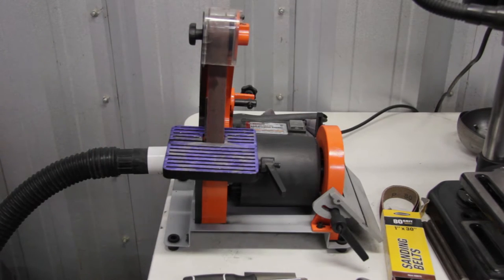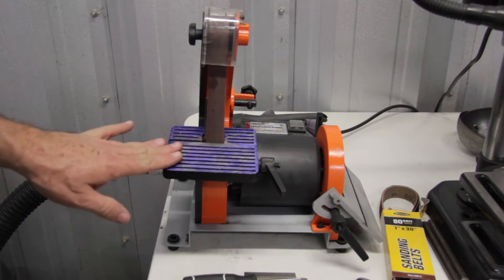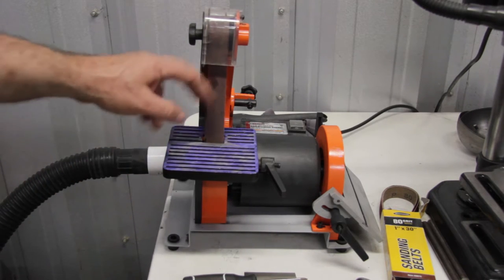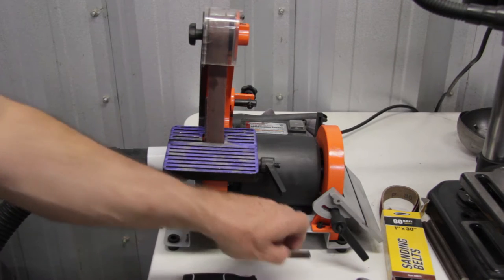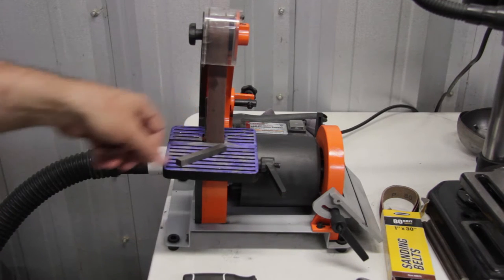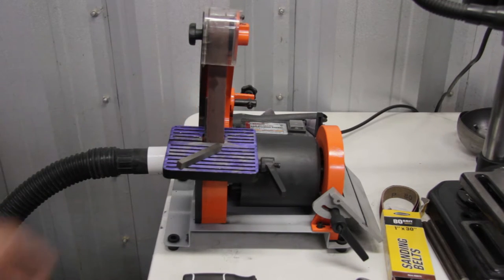We're going to take a look at how to adjust it, how to change belts, some of the issues with the belt sander. I primarily bought this to grind high-speed steel lathe tooling as well as tungsten electrodes.